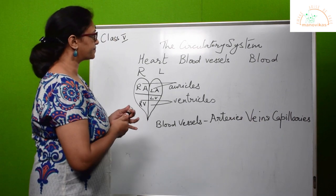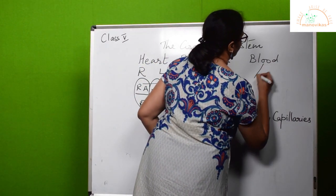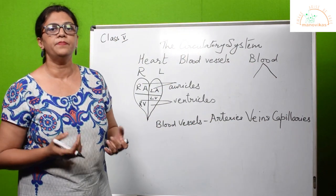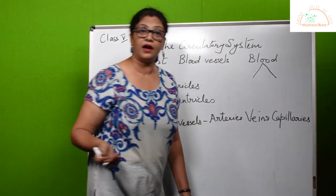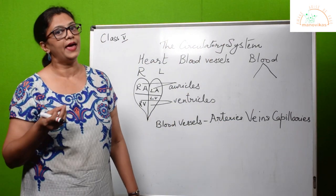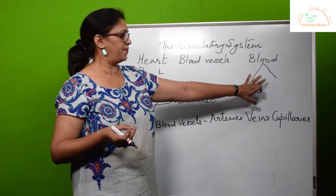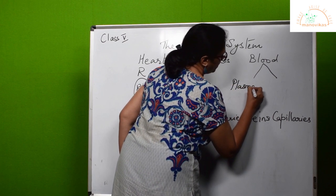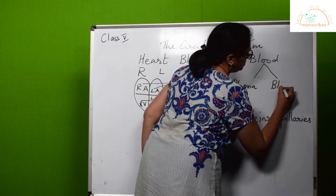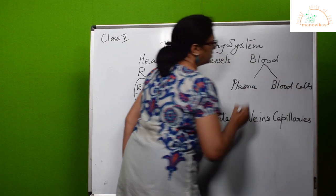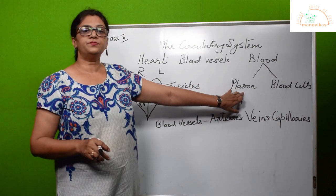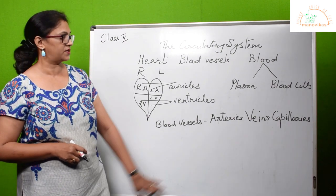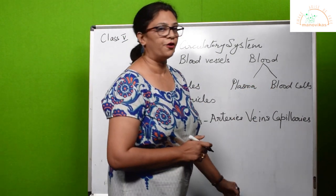Next we come to blood. Blood is the fluid that flows in the blood vessels. It is red in color because of a pigment called hemoglobin. Blood is made up of two parts: plasma and blood cells. Plasma is the fluid part of the blood. It carries nutrients and waste products.